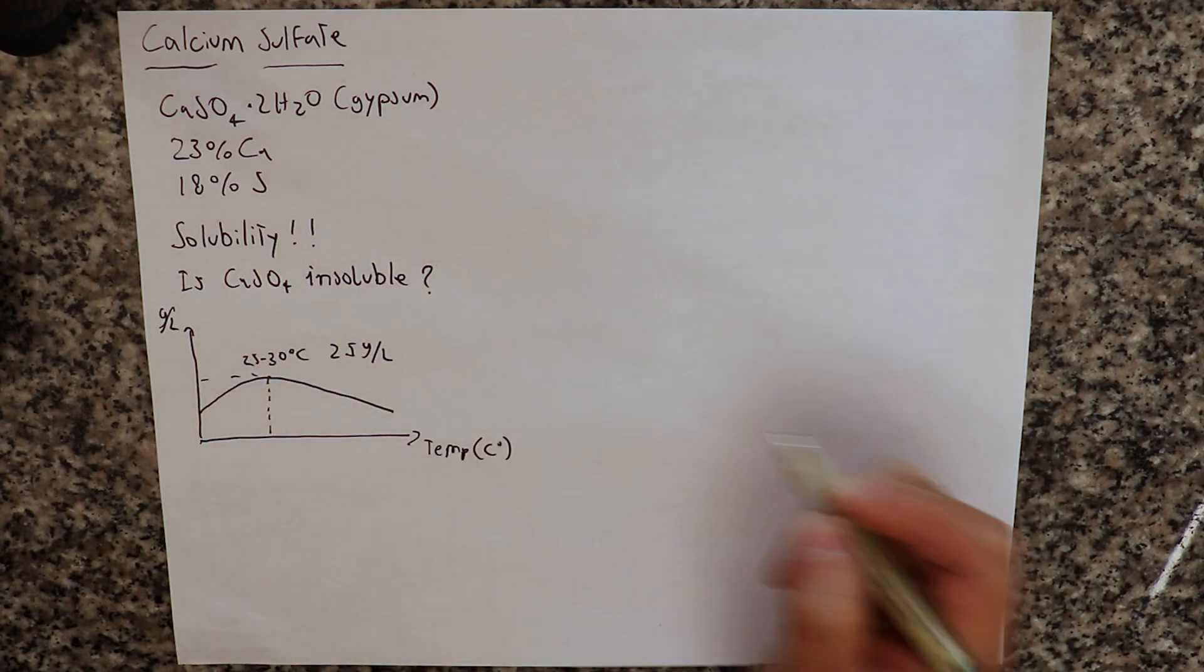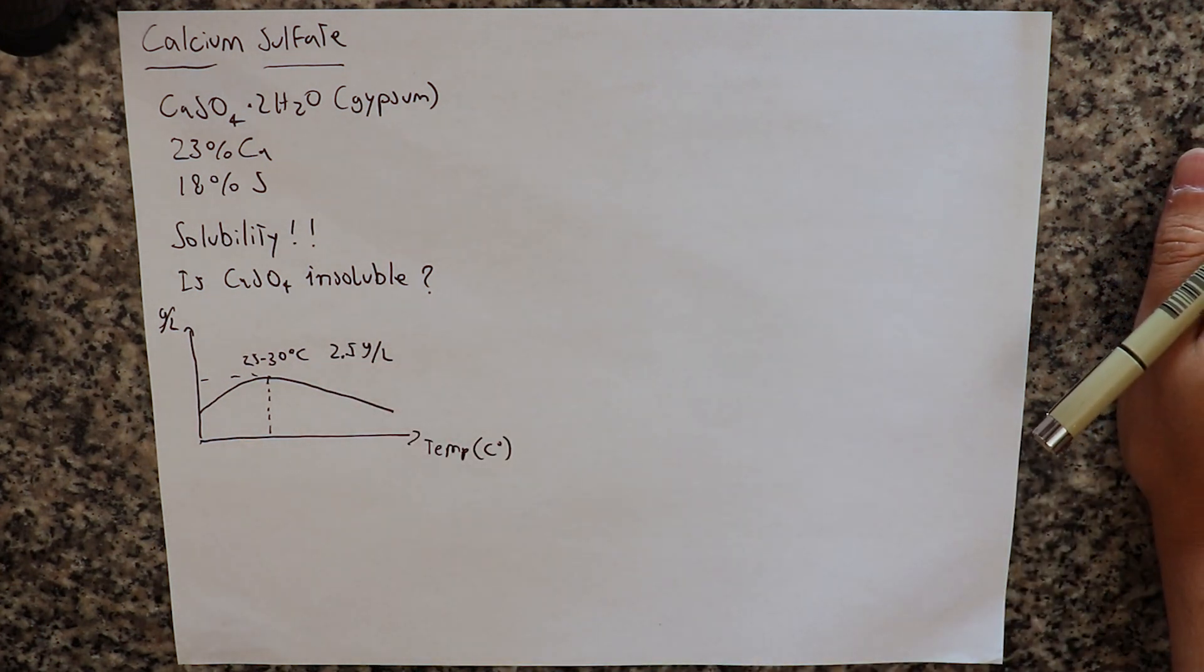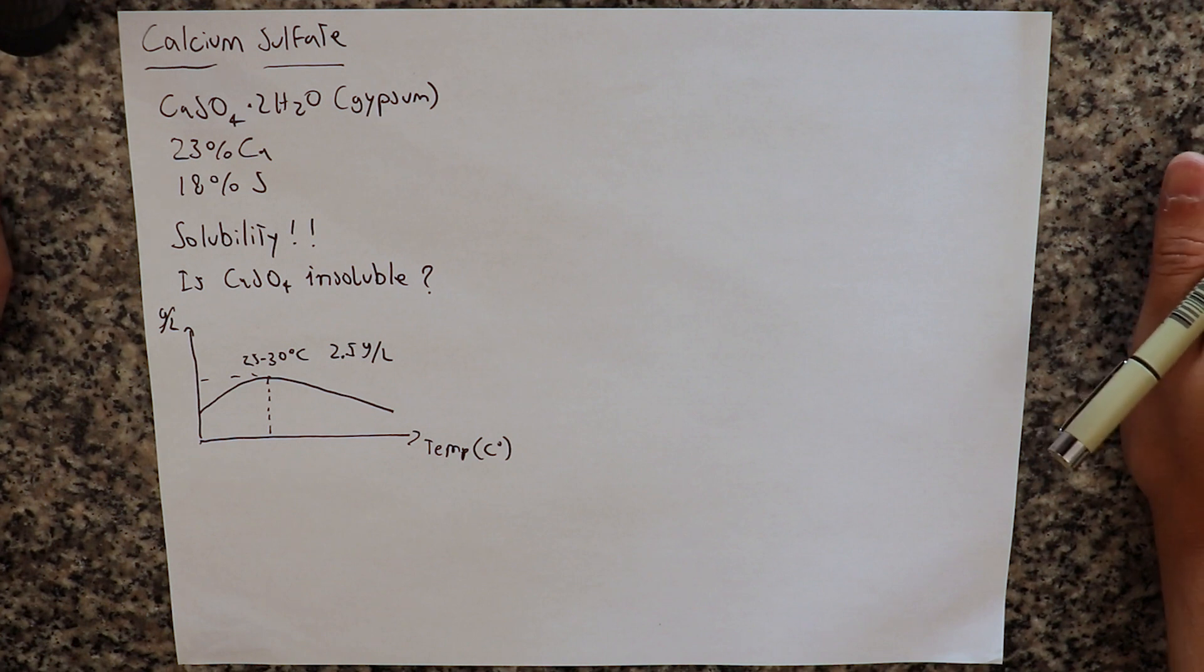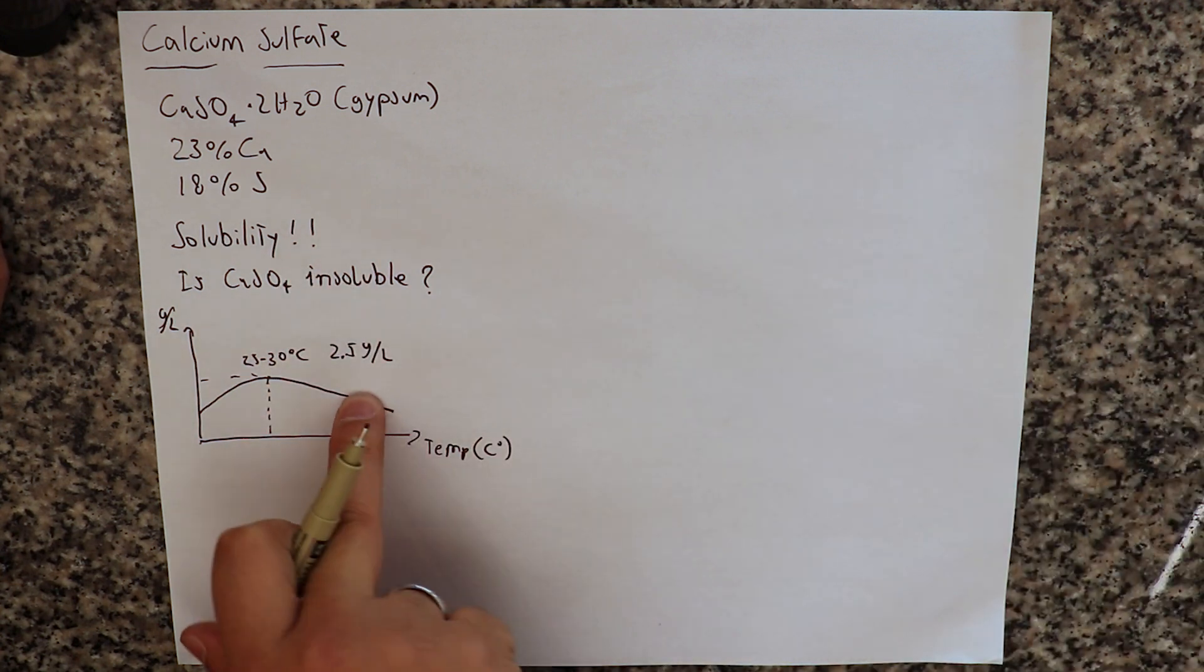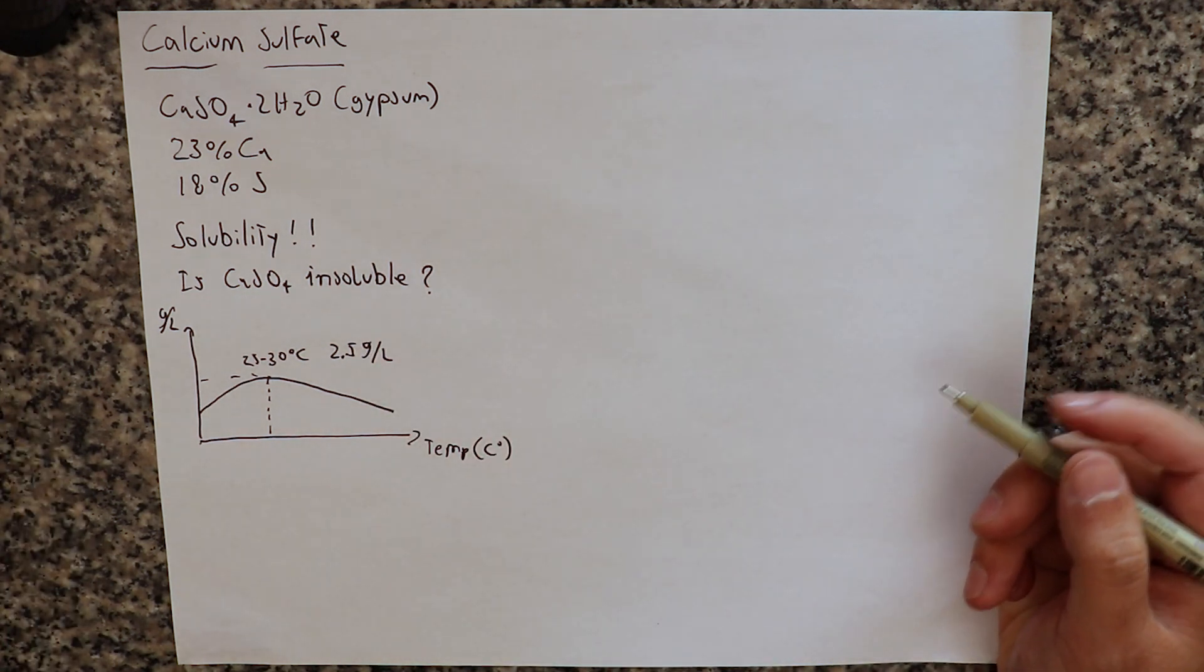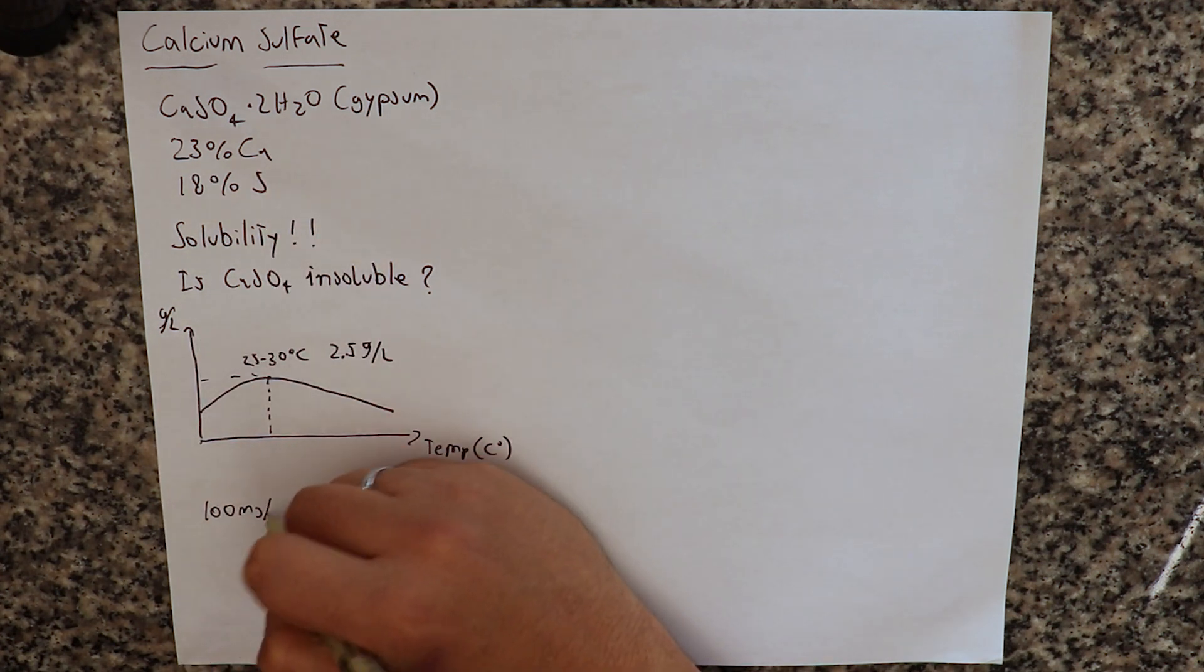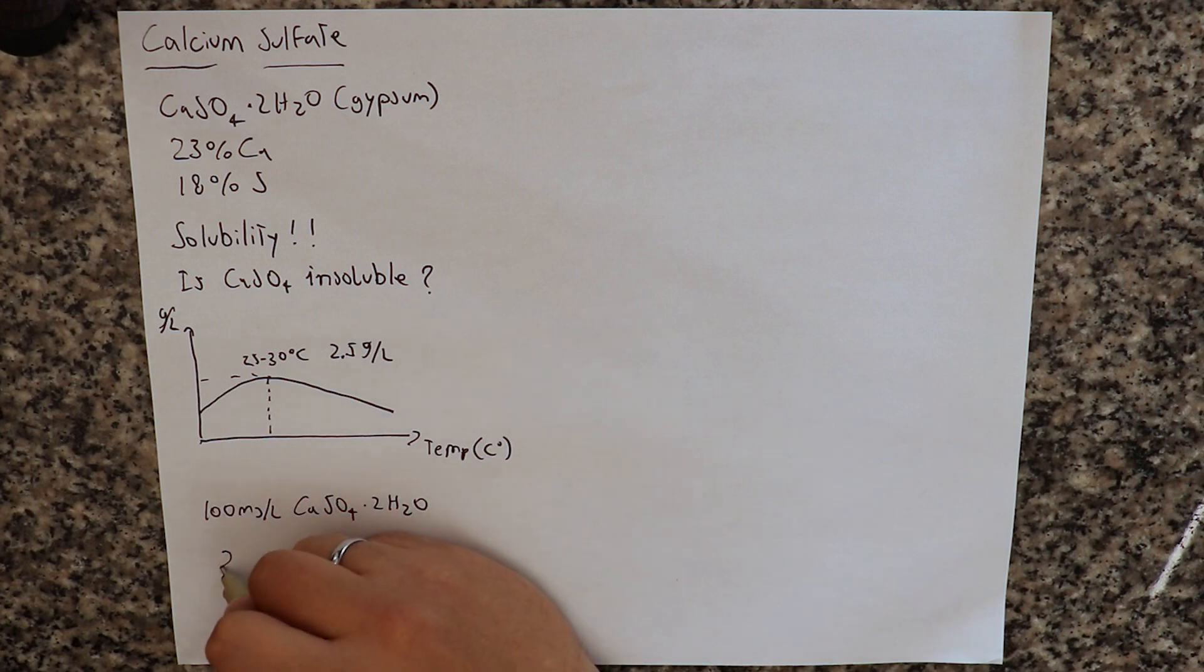So 2.5 grams per liter is not a lot if you consider something like calcium nitrate. We can probably dissolve depending on the temperature more than 500 grams per liter, so it's more than 50 percent soluble. Calcium sulfate on the other hand only a little bit, 2.5 grams per liter. But how much does that actually give us? We know from the composition that 100 milligrams per liter of calcium sulfate, of gypsum, would give us 23 ppms of calcium.